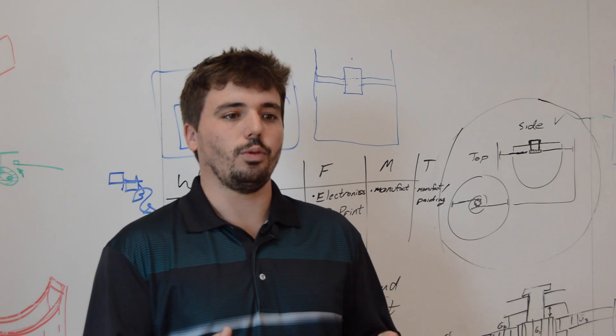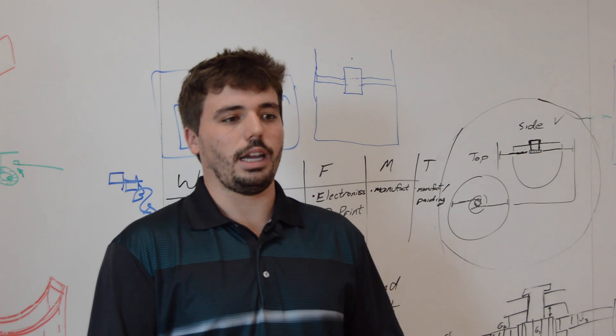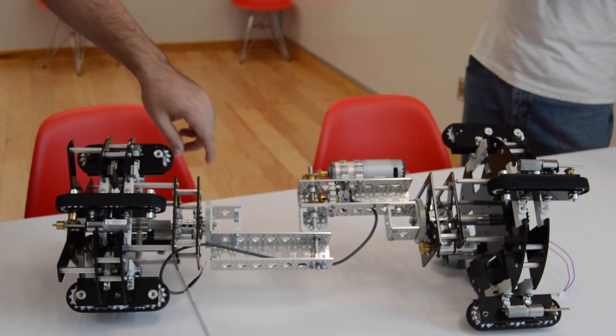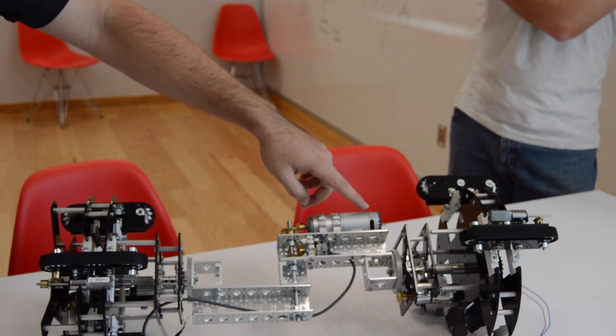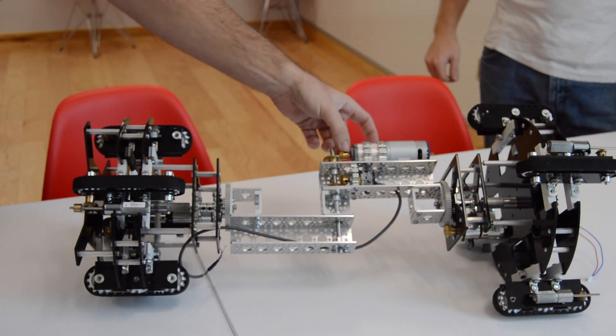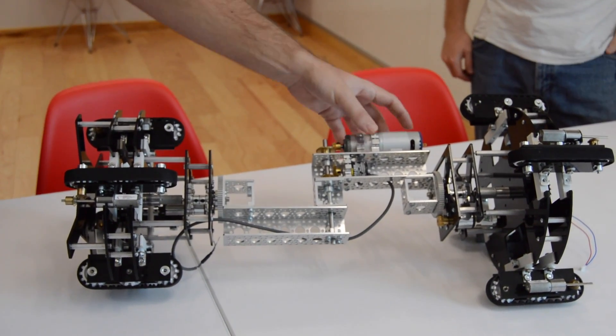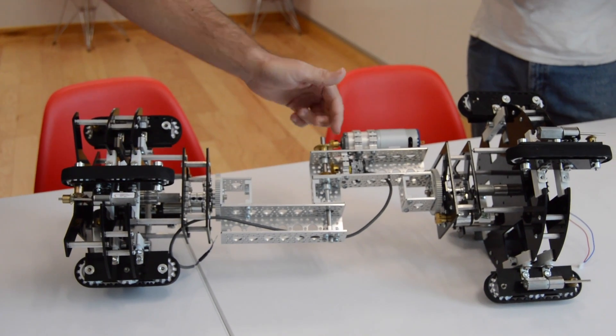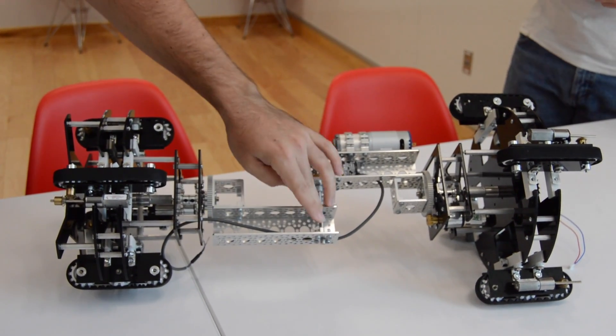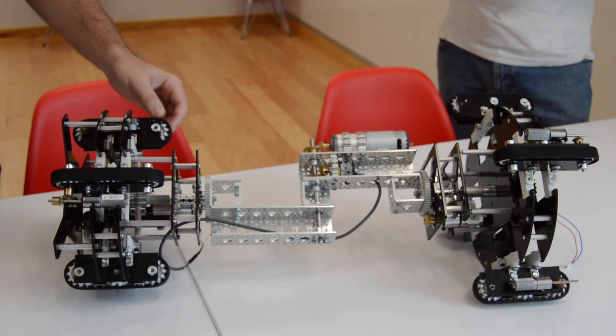When the robot locates a turn, the plates rotate and align themselves with the turn. Once aligned, the robot begins hinging the spine that separates the two halves, so it can bend itself around the turn.